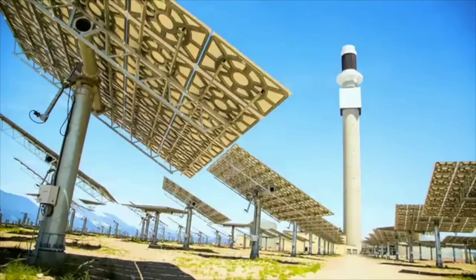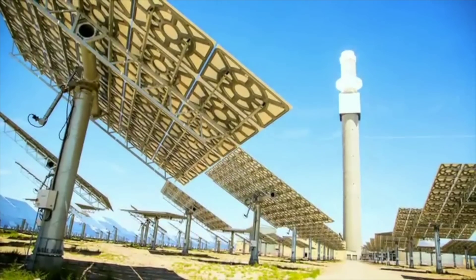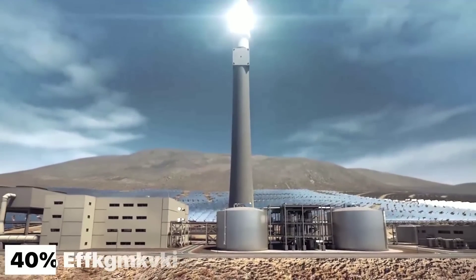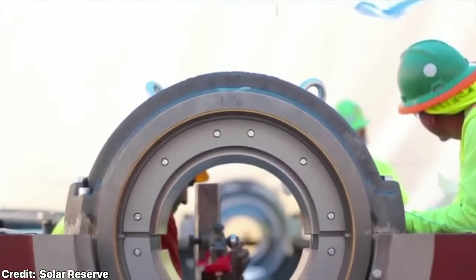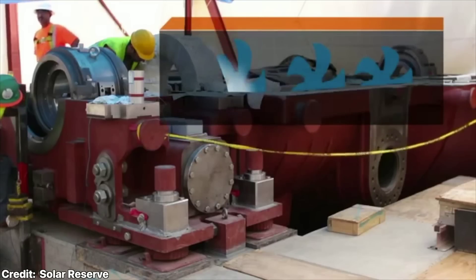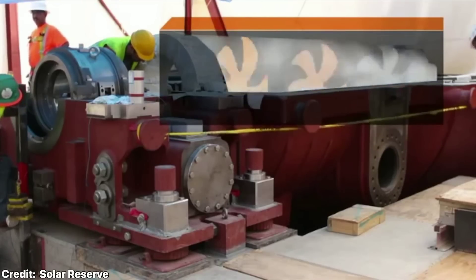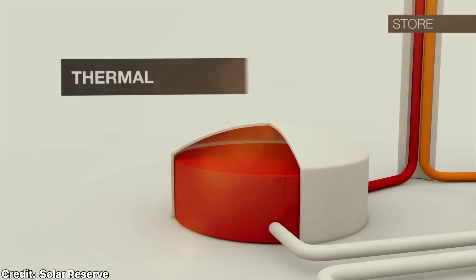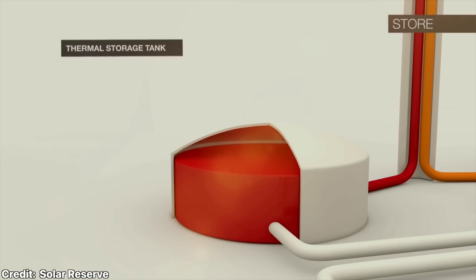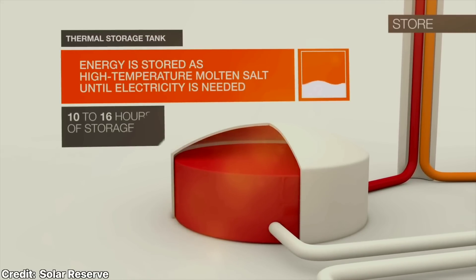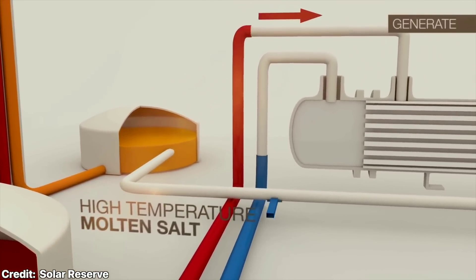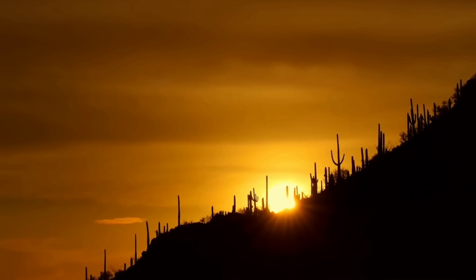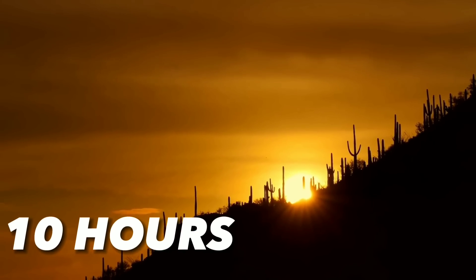The collection step used the pipes on the tower to heat up the molten salt. The conversion step used the heat exchangers to turn the hot salt into steam and power a turbine. The plant also had a storage system that allowed it to use the molten salt as a battery. The salt could store excess heat and release it later, when the sun was not shining. This way, the plant could provide electricity for up to 10 hours without any sunlight.